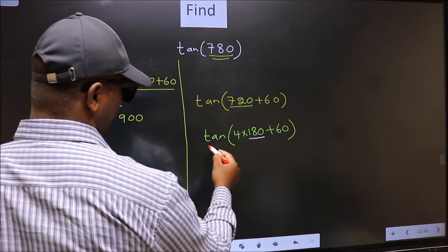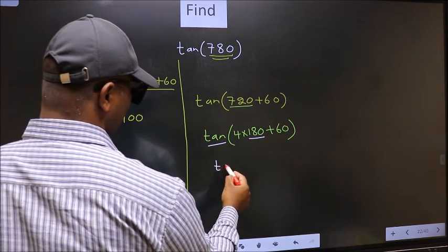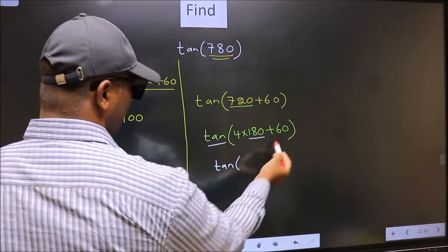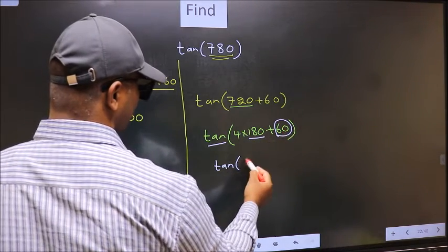Next, here we have 180. So tan is not going to change. It will remain tan. And inside, we get this angle 60.